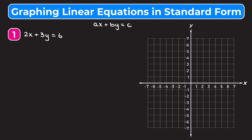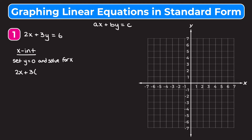What we want to do is find the x and y intercepts, then plot those and draw a line through them. Remember that the x intercept of a line is where the line crosses the x axis, so for any x intercept the y coordinate is always 0. We're going to set y equal to 0 and solve for x. We have 2x plus 3 times 0 equals 6, which simplifies to 2x equals 6. Dividing both sides by 2 gives an x intercept of 3.